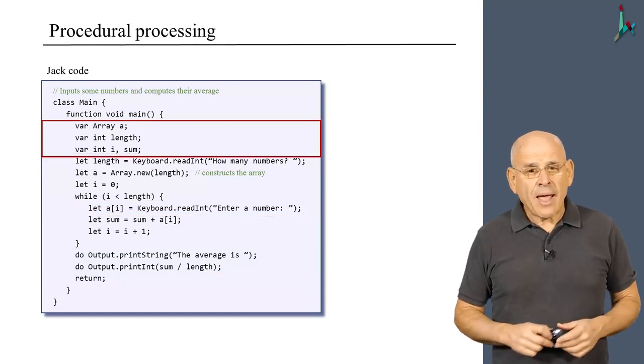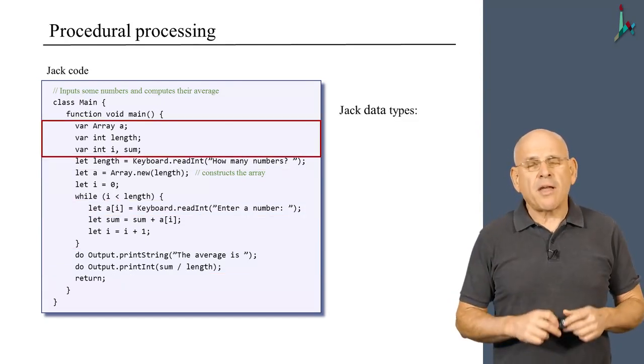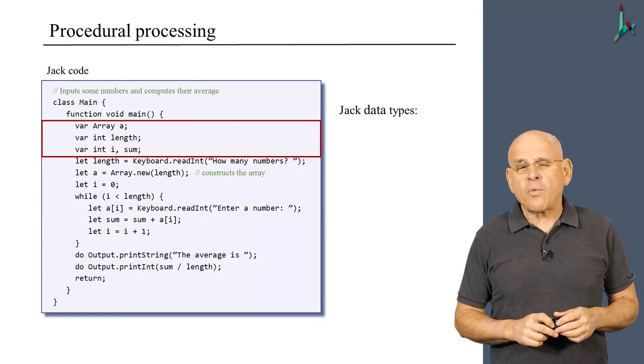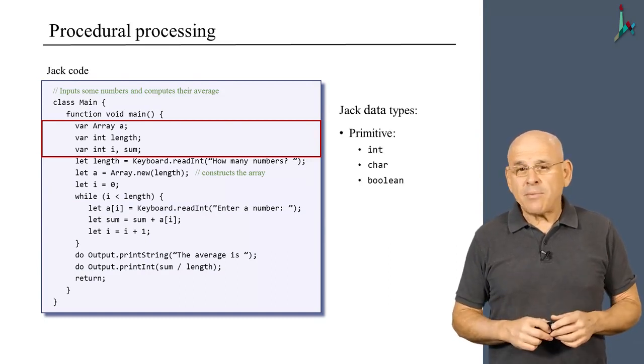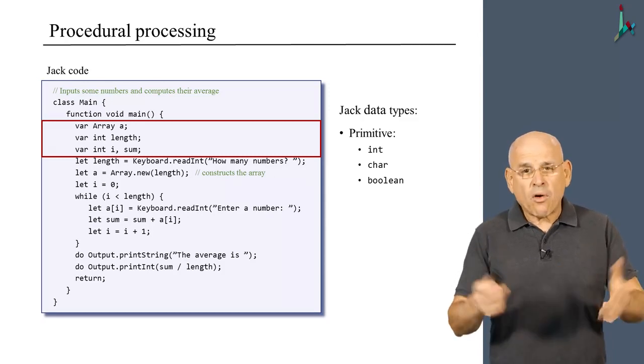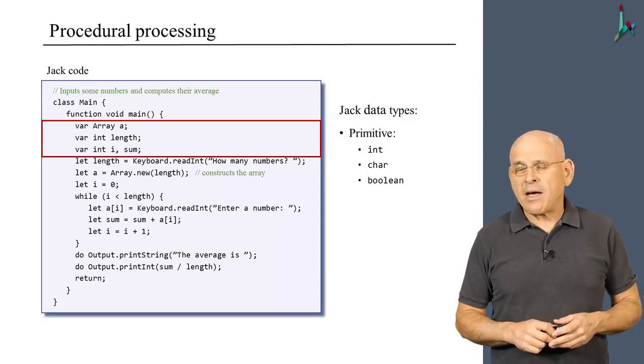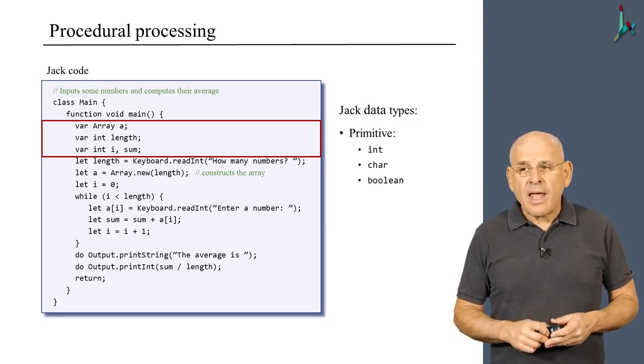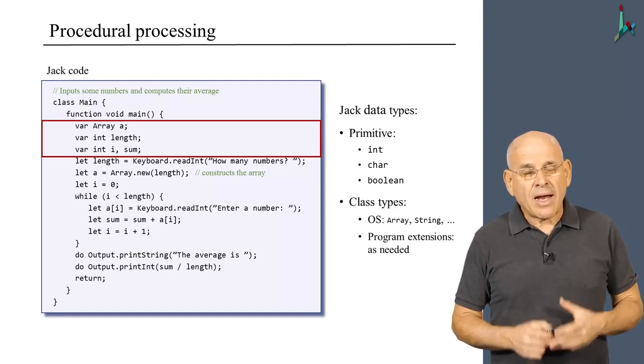Well, we also have data types. And if we focus on these three lines of code, we see that we have primitive data types, like int, that appears in this program. And in other programs, you will see more data types, like char and boolean.